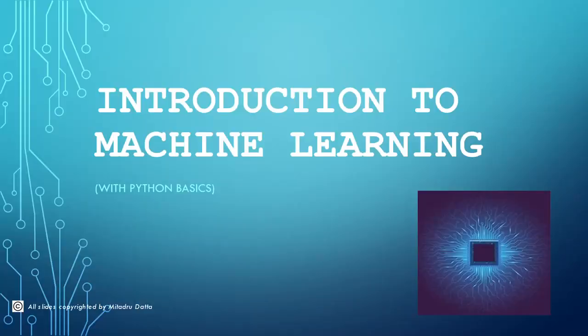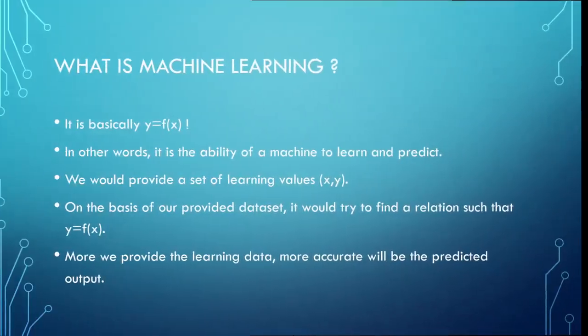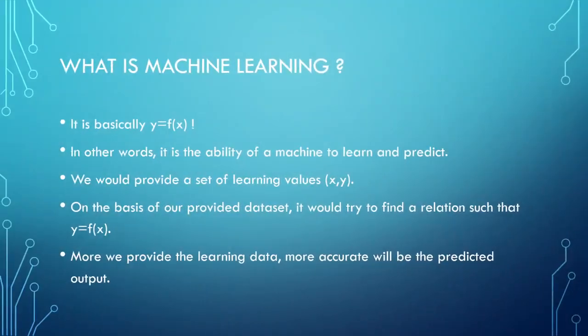Now in screen sharing mode, let's start. What exactly is machine learning? Simply put, it is y equals f(x) — nothing else. It is the ability of a machine to learn and predict. We provide a set of learning values, and based on our provided dataset, it tries to find relations such that y equals f(x).